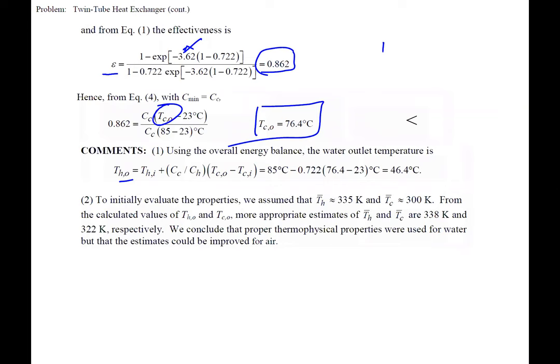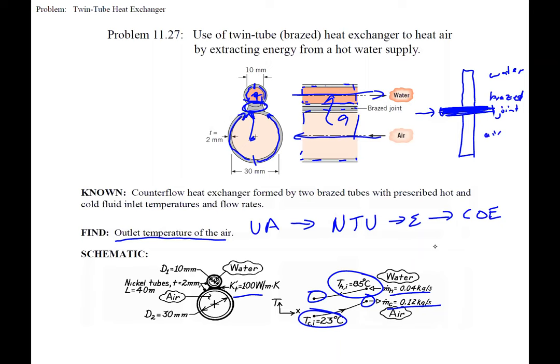If we also wanted the hot outlet temperature, we apply COE to the whole heat exchanger with the boundary around everything. Since Q is now internal to the boundary, we just equate mass-flow-rate times Cp times delta-T for the water to mass-flow-rate times Cp times delta-T for the air.